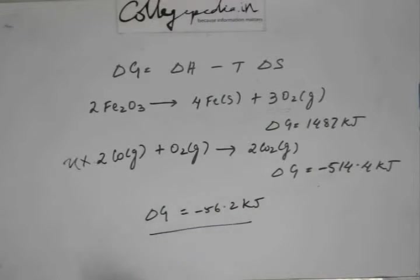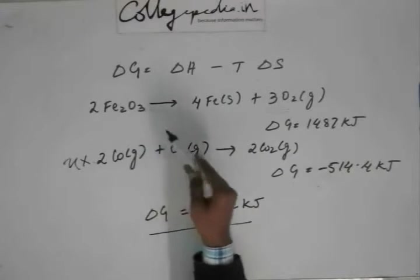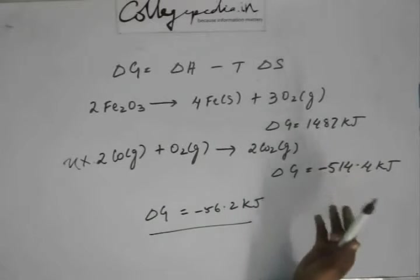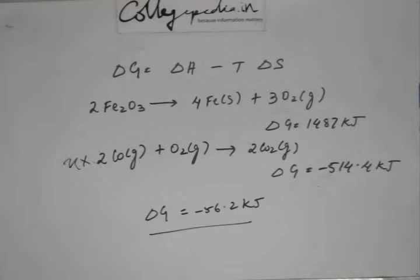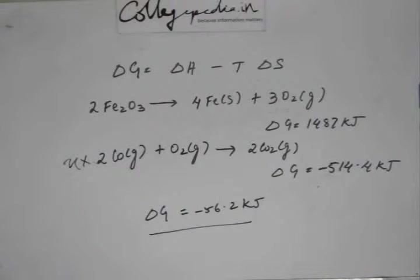So now as you can see, the net delta G is negative. So this opposite of rusting can happen, can occur. So actually you can remove oxygen from iron if you couple this reaction with the first reaction.